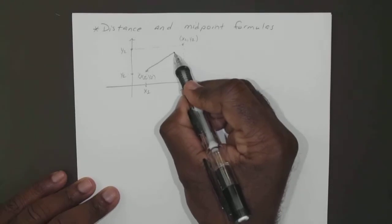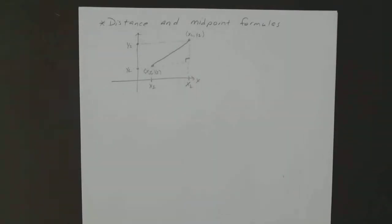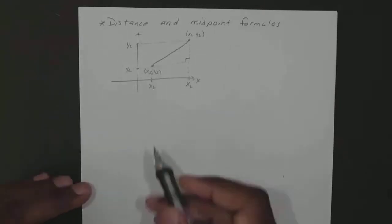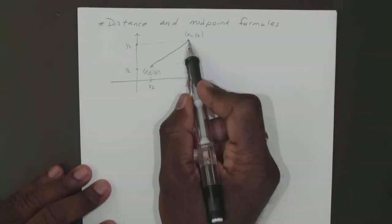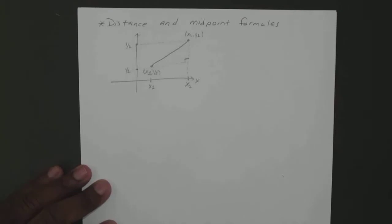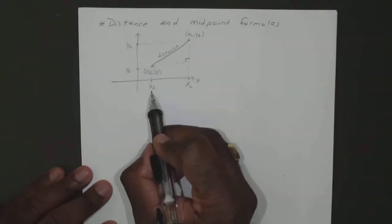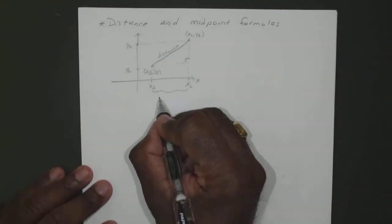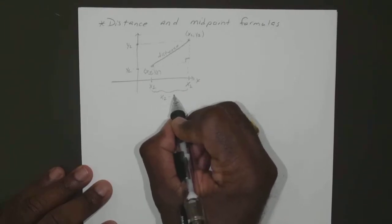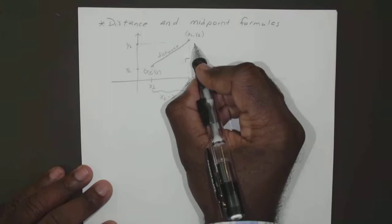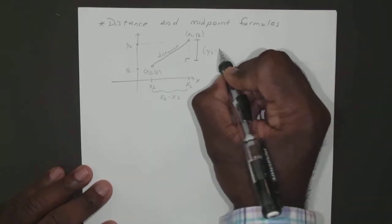So if we connect it to find the distance between those two, we have a right angle. Which means if we know our x and our y, or you can say a squared plus b squared equals c squared, we can use the Pythagorean theorem. We have our distance here, then we have our x value, and we know that our x value is just x2 minus x1. And we have our y value, which is just y2 minus y1.